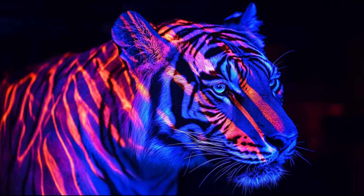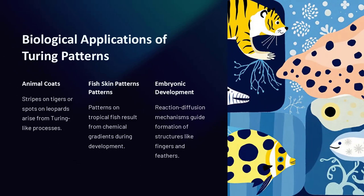Think of a music equaliser visualiser: depending on the song's frequency distribution, you may see distinct bars (spots), continuous waves (stripes), or chaotic movements (labyrinths) — each representing different patterns emerging from the same system. Turing patterns provide a theoretical framework for understanding various biological phenomena, particularly in morphogenesis — the process by which cells and tissues develop specific structures. Key examples include stripes on tigers or spots on leopards, which arise from Turing-like processes in pigment cells.